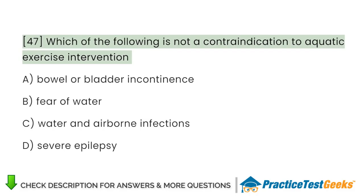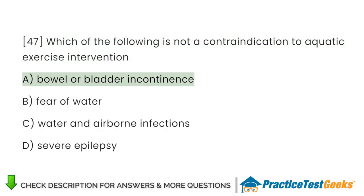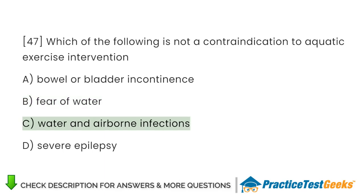Which of the following is not a contraindication to aquatic exercise intervention? A. Bowel or bladder incontinence. B. Fear of water. C. Water and airborne infections. D. Severe epilepsy.